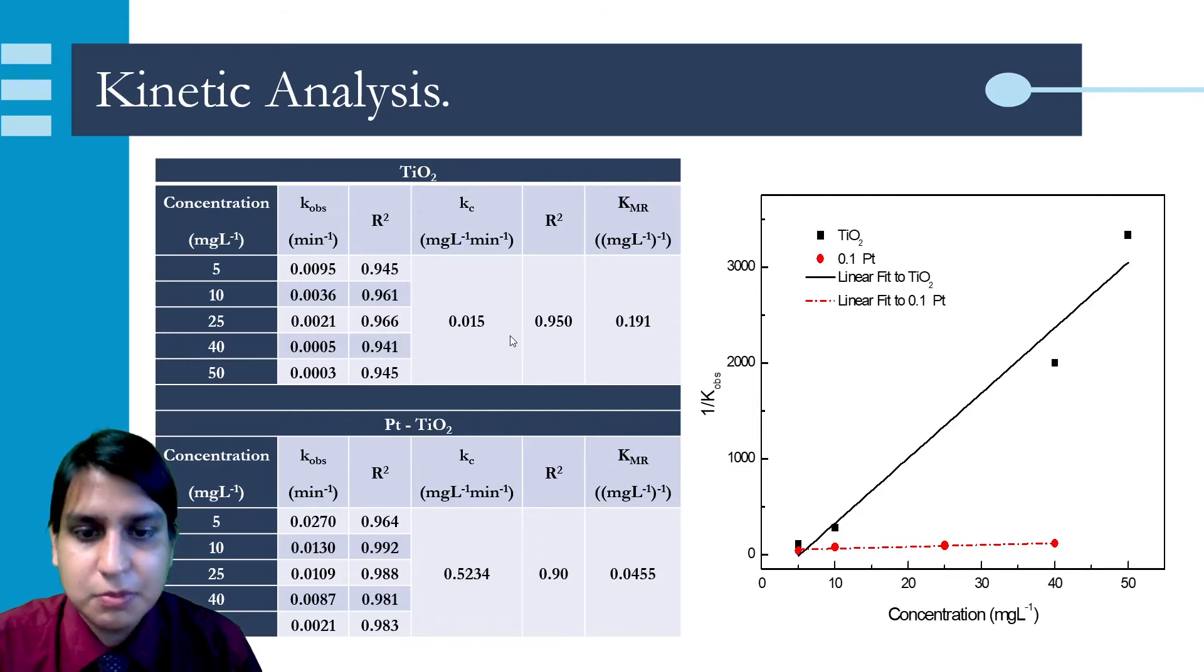In the case of platinum-titanium dioxide, the rate is enhanced from 0.015 to 0.52 milligrams per liter per minute. The data analyzed using this model suggests that the dye reacts quickly on the surface of the doped semiconductor materials, thus inhibiting the blocking of the active site of the semiconductor surface as occurs on the undoped titanium dioxide.